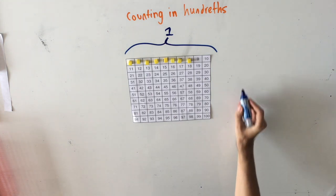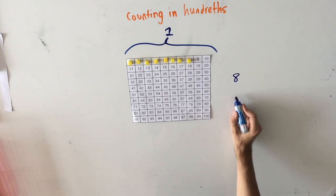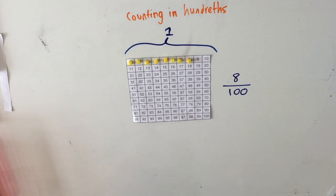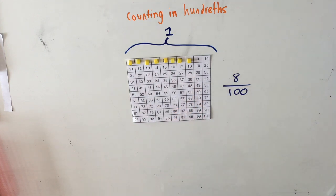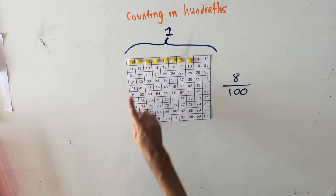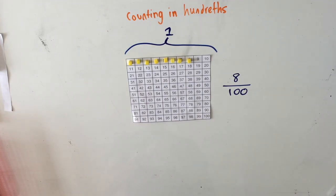I write this by writing an eight, and then a line, and then one hundred underneath the line. The eight tells us how many hundredths I'm showing. The one hundred tells us how many pieces there are to make up that one whole.